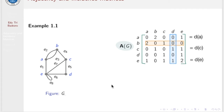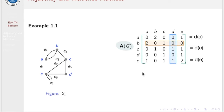In general, if you sum the entries in every row of the adjacency matrix of G, you get the degree of that vertex. The sum of each column also represents the degree of the corresponding vertex. From the definition, the adjacency matrix is always symmetric for any graph.